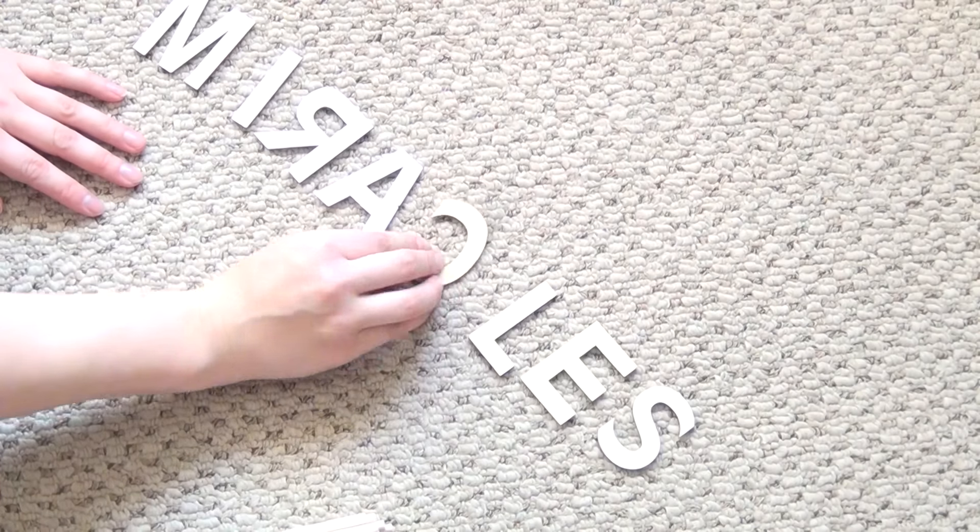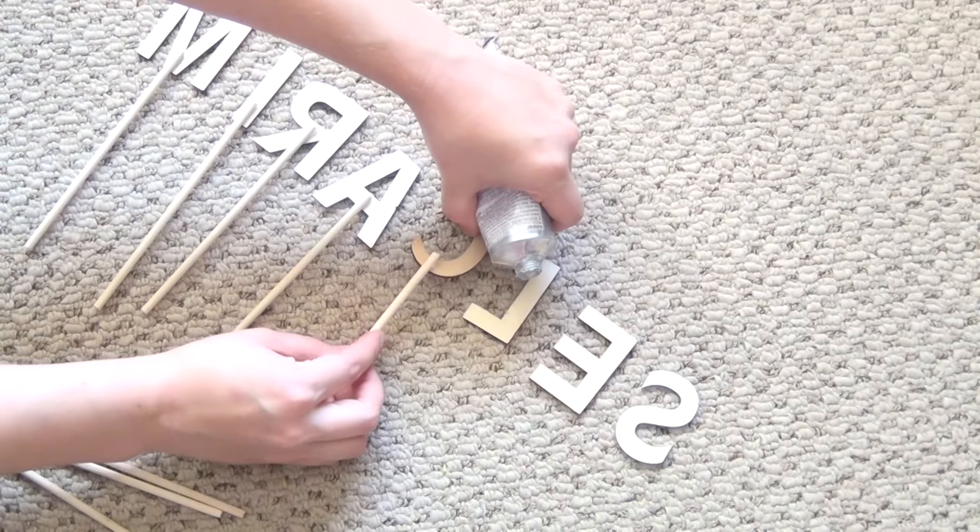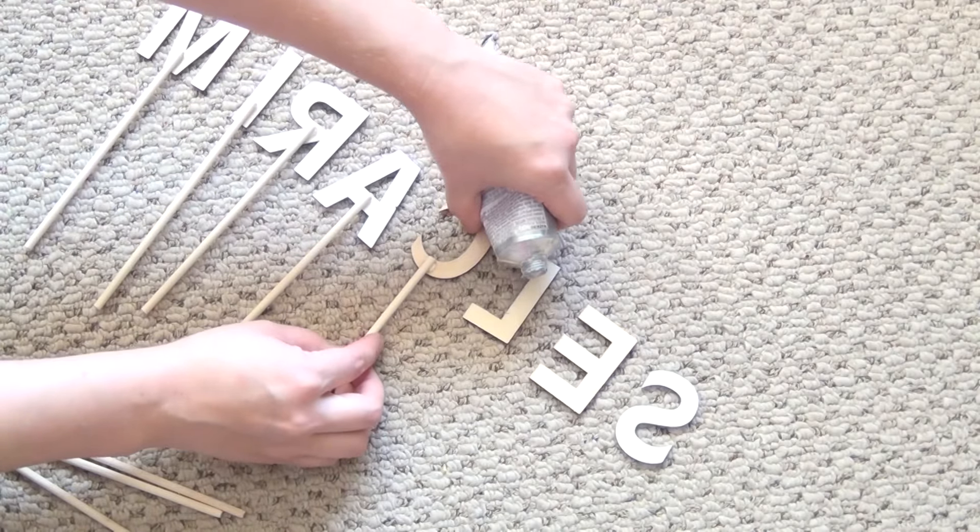Lay out all of your wooden letters and then flip them over so the back sides are facing up. Then adhere the short dowels to the backs of the letters using a generous amount of E6000 and leave it to dry for about an hour.